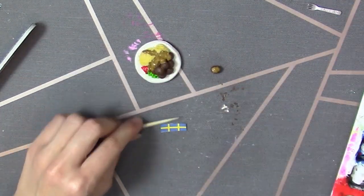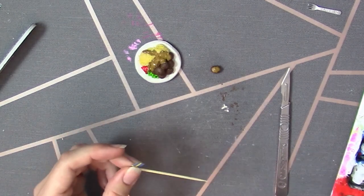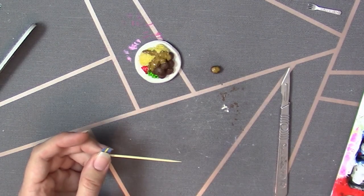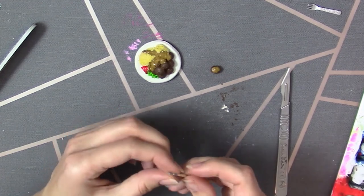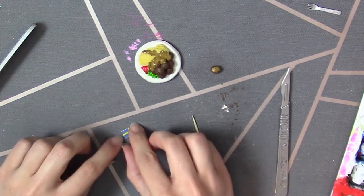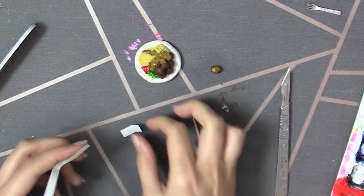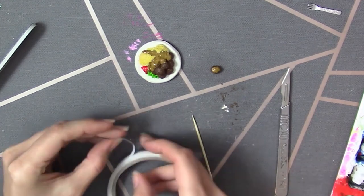Lastly, I made a flag using a flag I printed. I just googled the Swedish flag, put it into Photoshop, and made it really tiny. Then I used a cocktail stick and some double-sided tape to stick this together.